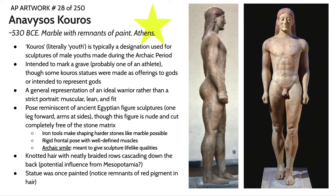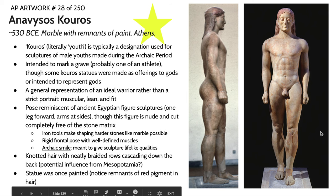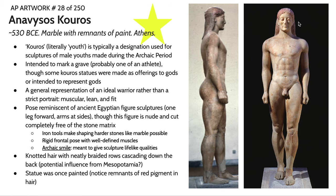But there are a couple of notable differences. For one, the figure is nude — this is pretty common in ancient Greek statuary of men throughout all of ancient Greek history. The statue is also cut completely from the stone matrix. We're also seeing this very trademark element of the archaic smile — this Lenny face. Early Greek statuary typically shows figures with longer hair as well — this long knotted hair cascading down the back, which might be an influence from Mesopotamian sculpture. There are also traces of paint left on the sculpture, most notably in the hair.